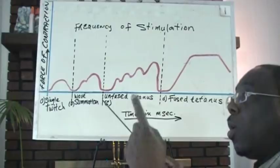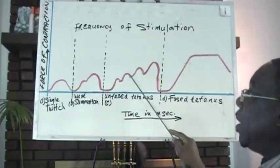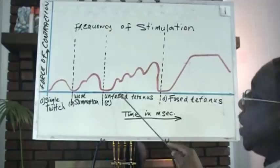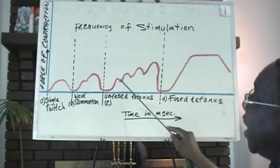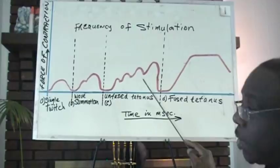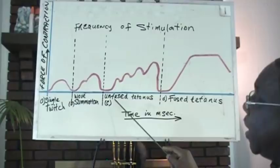The more stimuli occurring at the same time, the more of these climbing addition or summation of waves are occurring. This is a condition called unfused tetanus. Unfused because you can see gaps between each of the responses, each of the contraction responses between the stimuli.